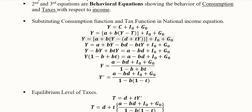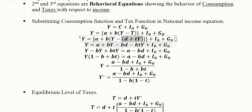We begin simplification starting from the first definitional equation. We substitute the value of consumption, and then substitute the tax function for T. After these substitutions, the only remaining endogenous variable is Y.